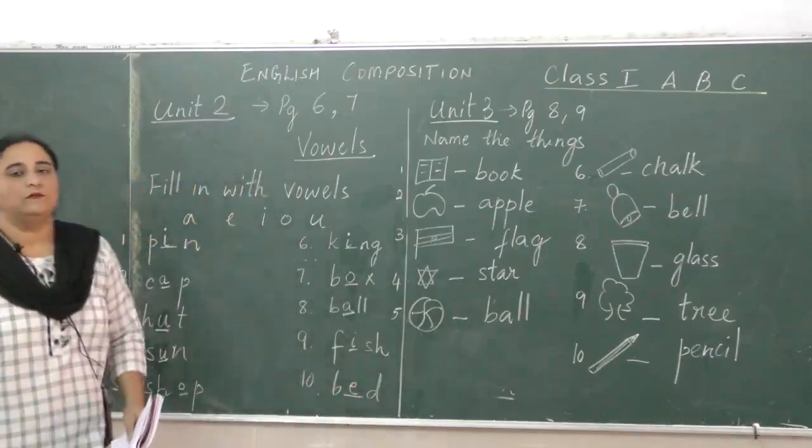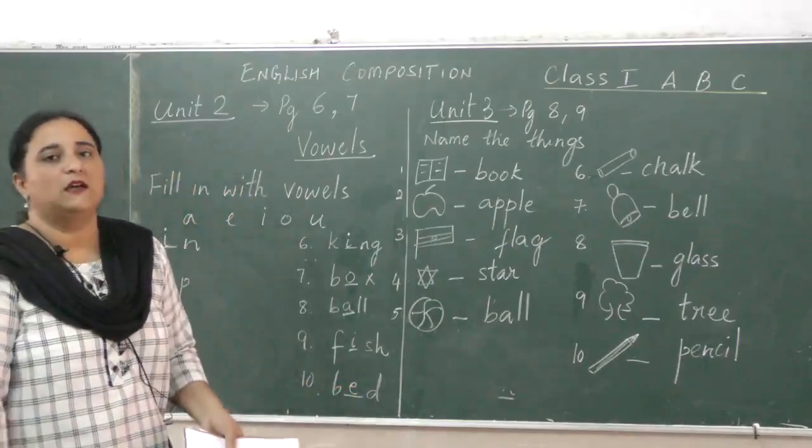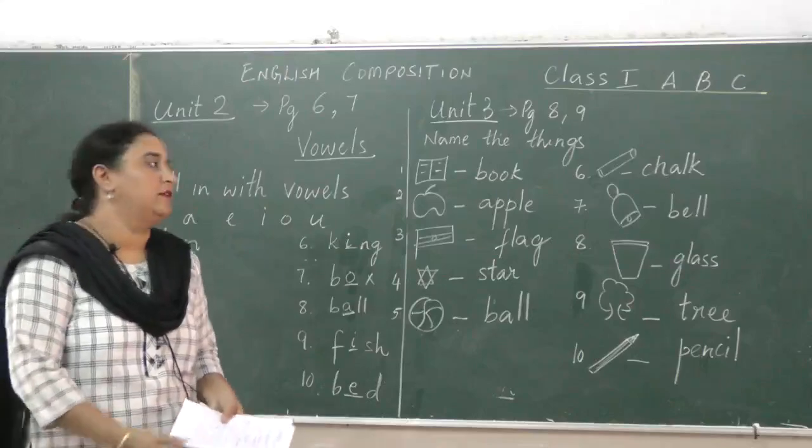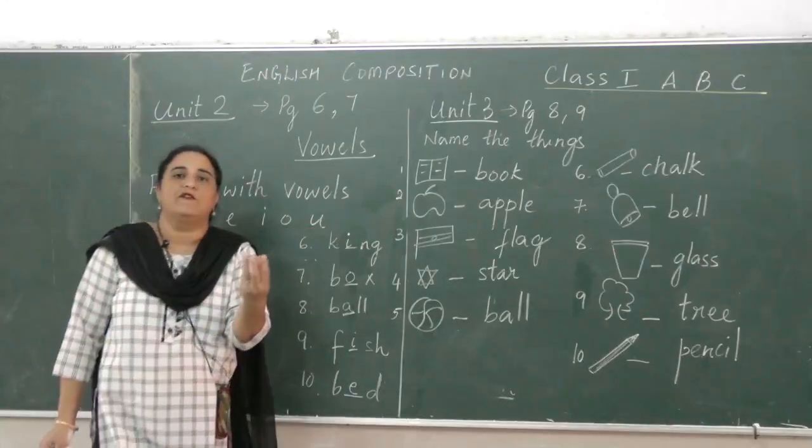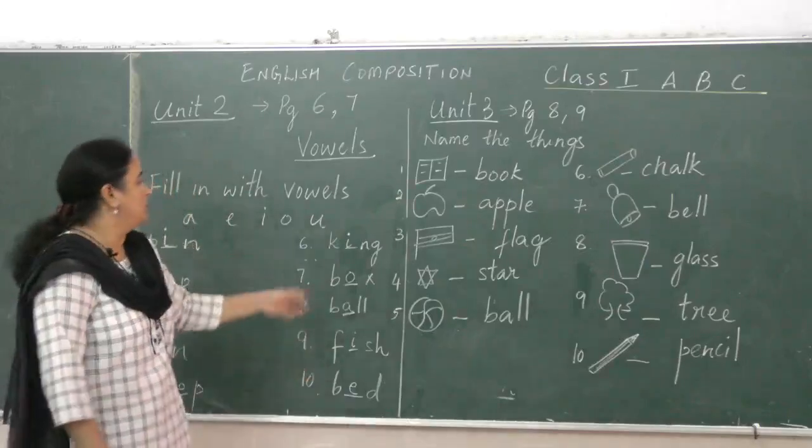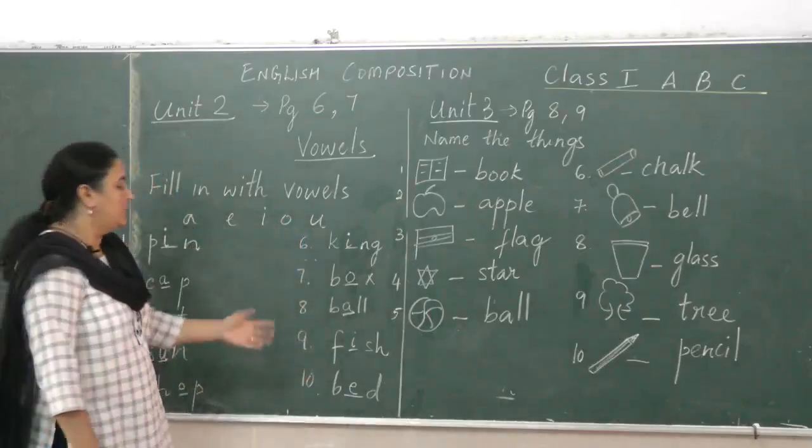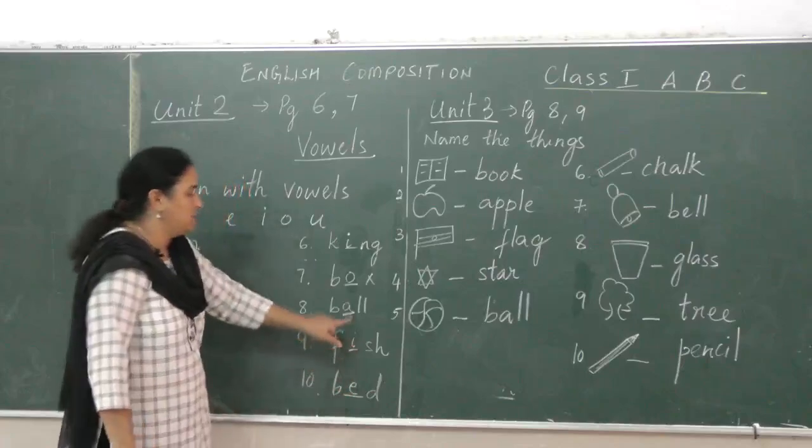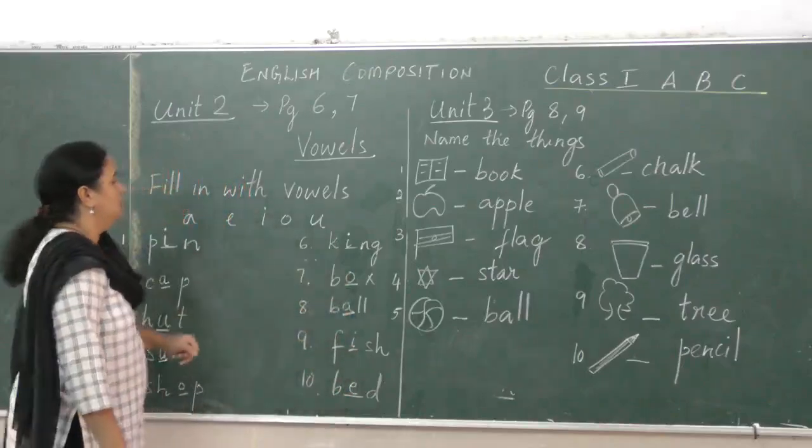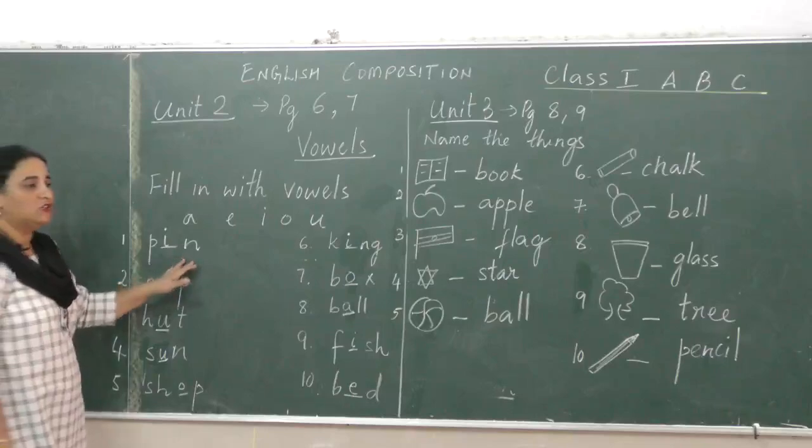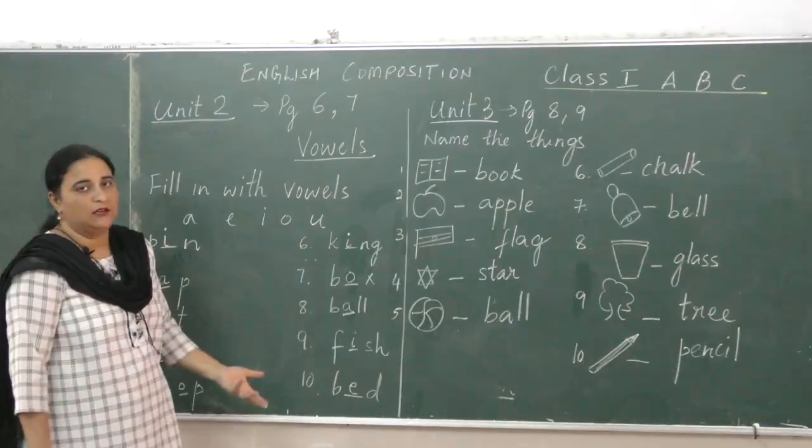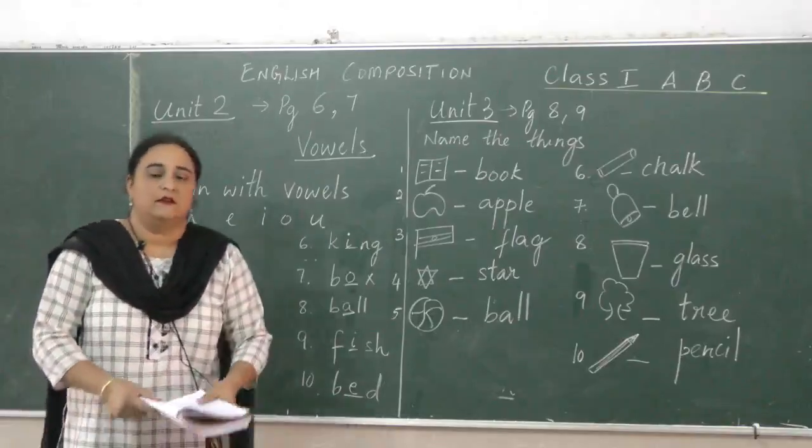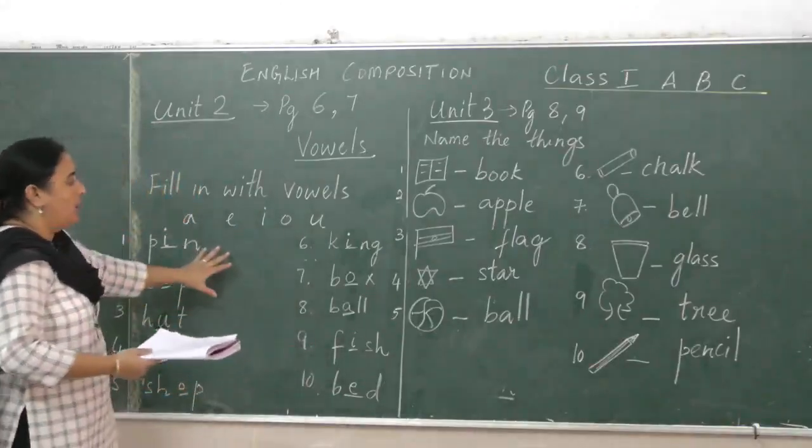Bed, E is correct. You can write B-A-D, bad also, it's correct. B-U-D, bud. Bud is a flower that blooms, that is also correct. The word, whatever vowel alphabet you put to make the word in the blank, it has to be correct. You just cannot put any vowel and make a word, it has to make proper sense. So this is the vowels.